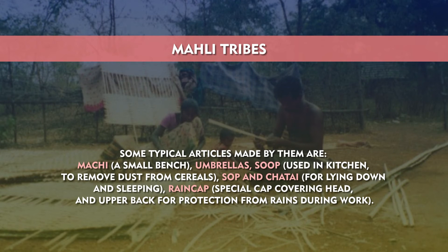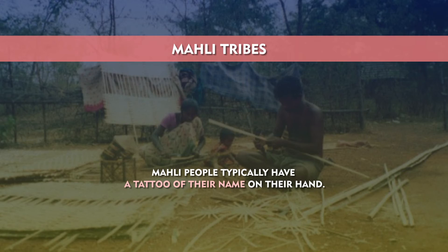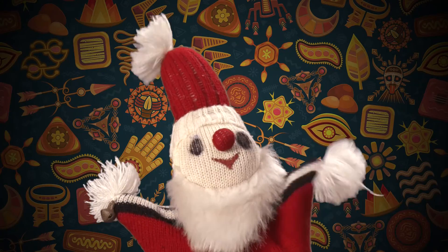Mali tribes: Mali is the name of a tribe of India. It is a scheduled tribe of the state of West Bengal and Jharkhand. They mostly reside in Santalparagnas and certain other regions of Jharkhand and in the adjoining areas of West Bengal. Their population is dwindling. Mali people traditionally earned their livelihood by selling articles made of bamboo. Some typical articles made by them are machi, a small bench, umbrellas, soup used in the kitchen to remove dust from cereals, chatai for lying down and sleeping, and rain cap, a special cap covering the head and upper back for protection from rains during work. Mali people typically have a tattoo of their name on their hand.